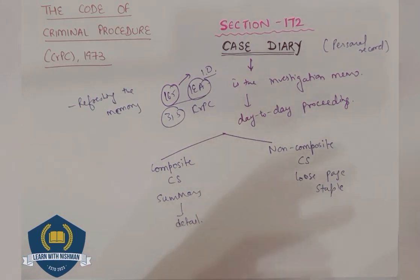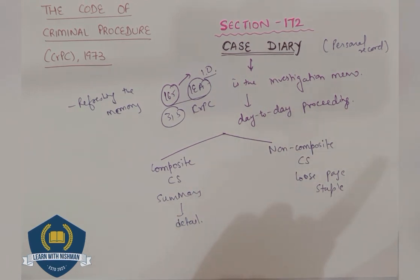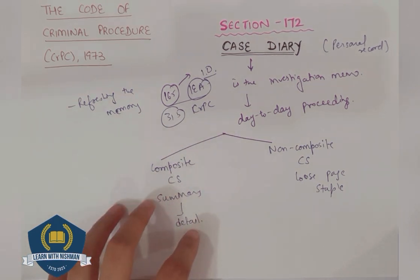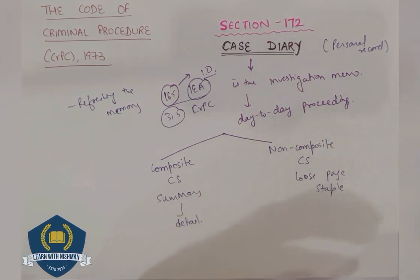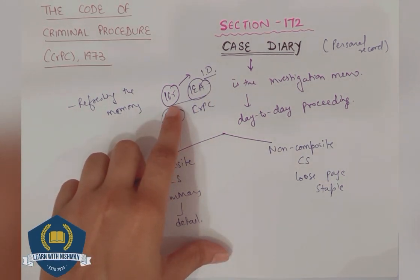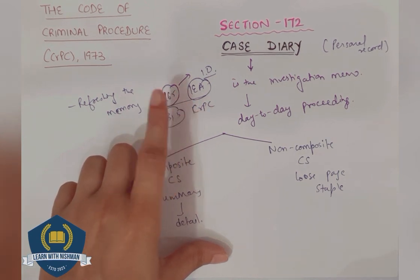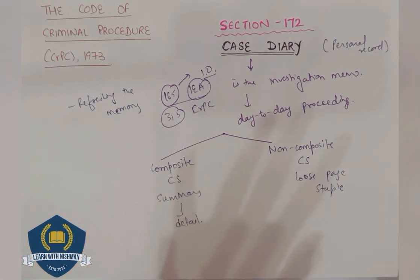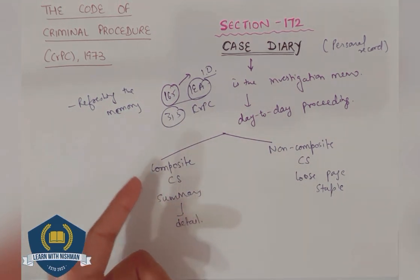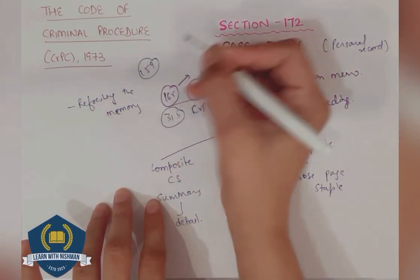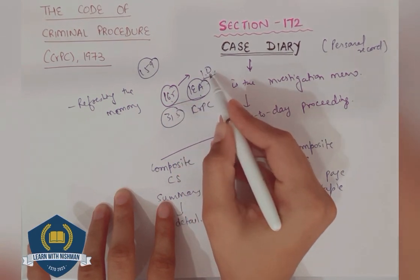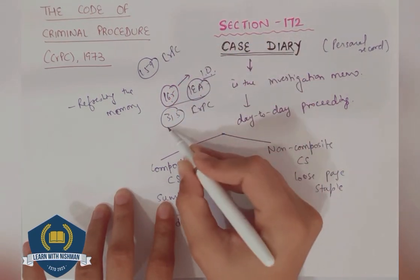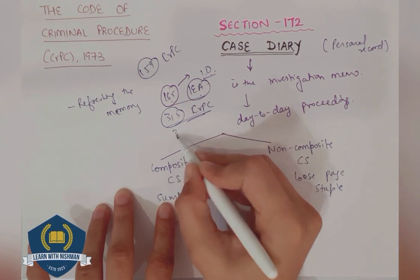The accused does not have the right to copy the Case Diary. It is the court which, in its discretion, can call for the Case Diary only when it sees the need. The court can ask questions to the investigating officer under Section 165 and to the accused under Section 313 CrPC. The court can summon witnesses under Section 311, and can contradict the investigating officer on the basis of the Case Diary. The police officer himself can also use the Case Diary for refreshing his memory under Section 159 of the Indian Evidence Act.